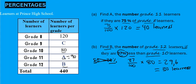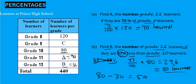Now we can subtract to find the learners in grade 12. The learners in grade 12 are 30 learners less than grade 10. So take grade 10, which is 80, and minus the 30 learners — which is 37% of 80 — and you find that we have 50 learners in grade 12.